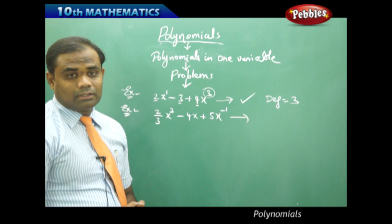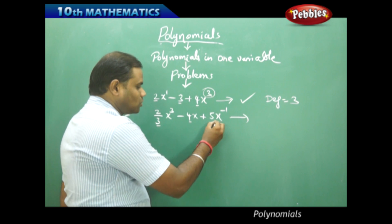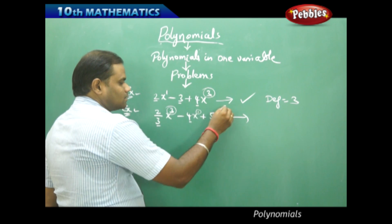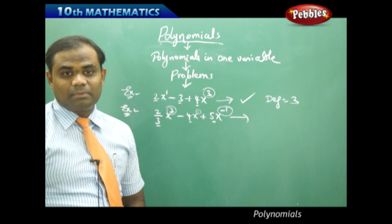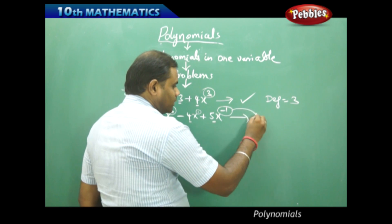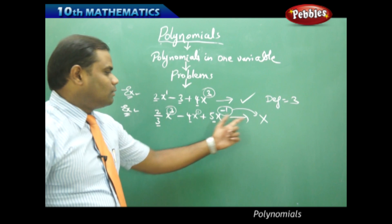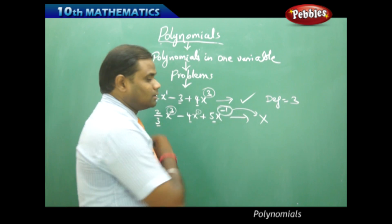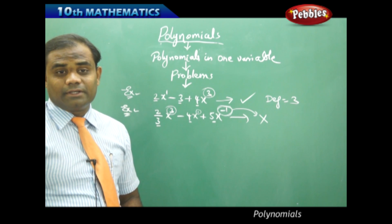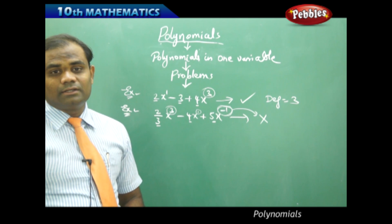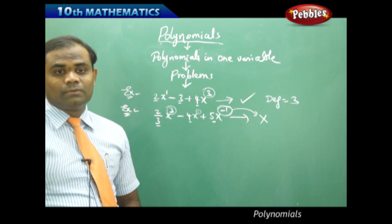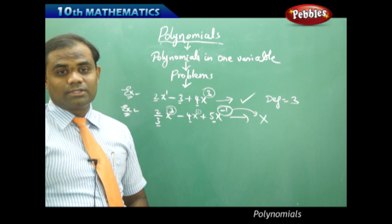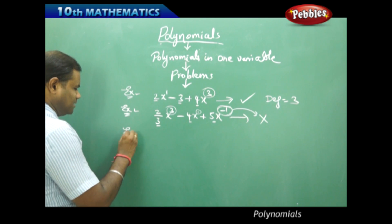Let us check if this next expression is a polynomial. The coefficients are real, but in this case there is a negative integral power. Therefore, this is the case where it fails — the given algebraic expression is not a polynomial because the powers cannot be negative integers. So, any discussion about the degree of this expression does not arise because it is not a polynomial.